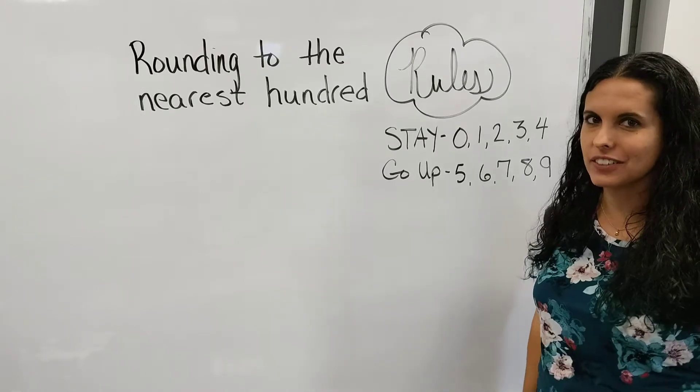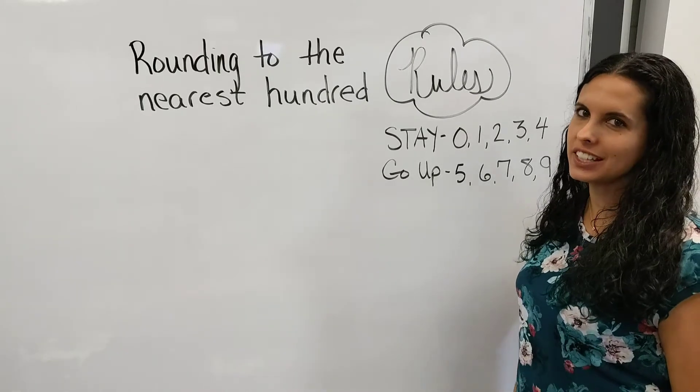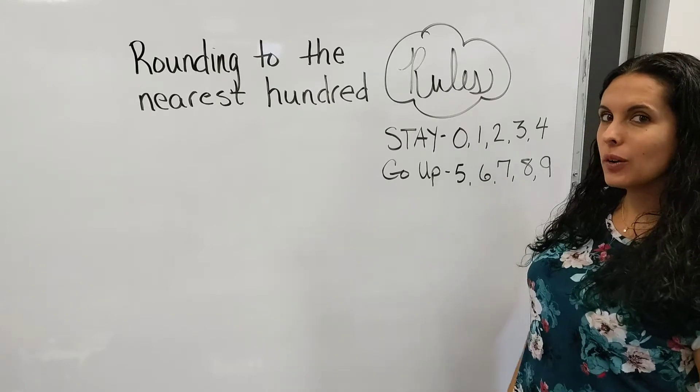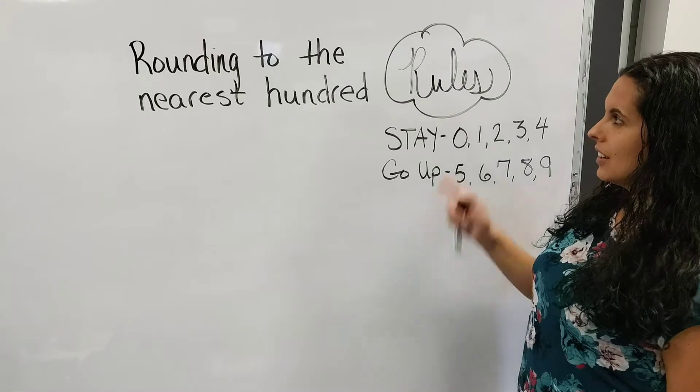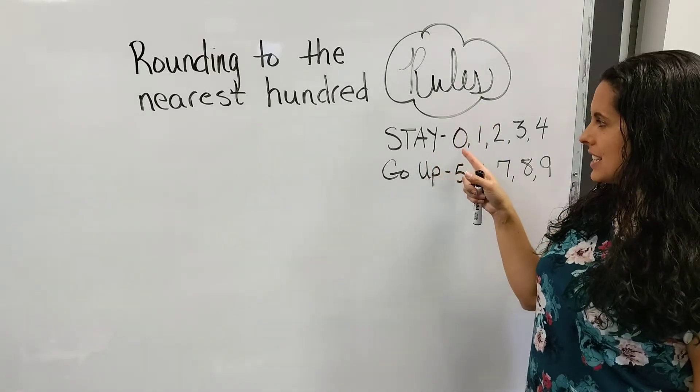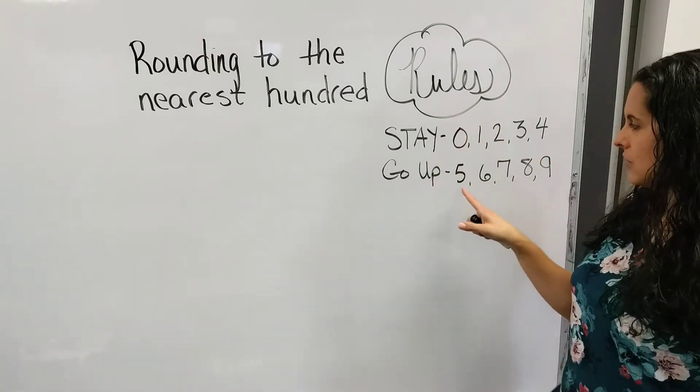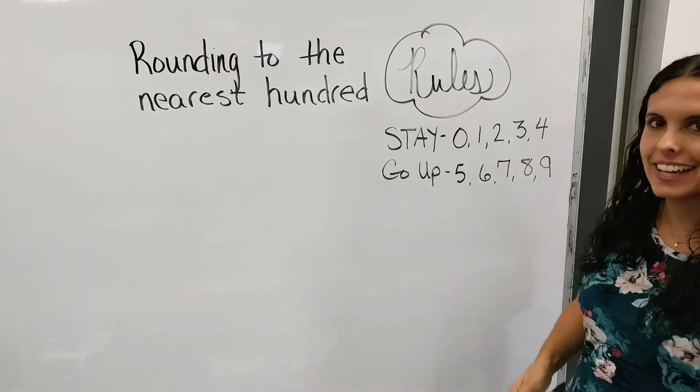In today's lesson, we're going to practice a few more examples of rounding to the nearest hundred. So I always tell my students to write the rounding rules on their paper first. Our rules are: stay 0, 1, 2, 3, 4; go up 5, 6, 7, 8, and 9.